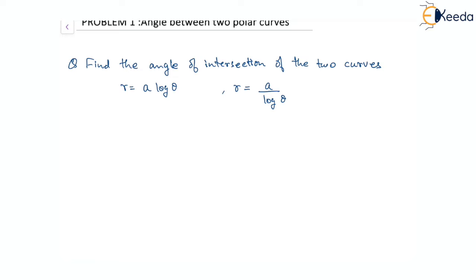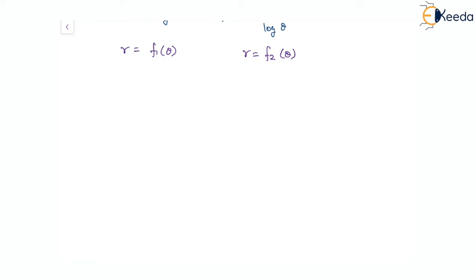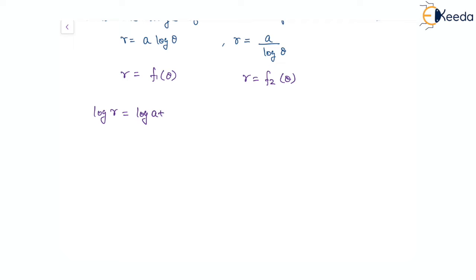So basically this is r equal to f₁(θ) and this is r equal to f₂(θ). From here, as we have discussed, we will start by taking log on both sides. We will have log r equal to log a plus log of log θ, since log of a times log θ becomes log a plus log of log θ. Similarly, on the other side, we will have log r equal to log a minus log of log θ, since we have log θ in the denominator.